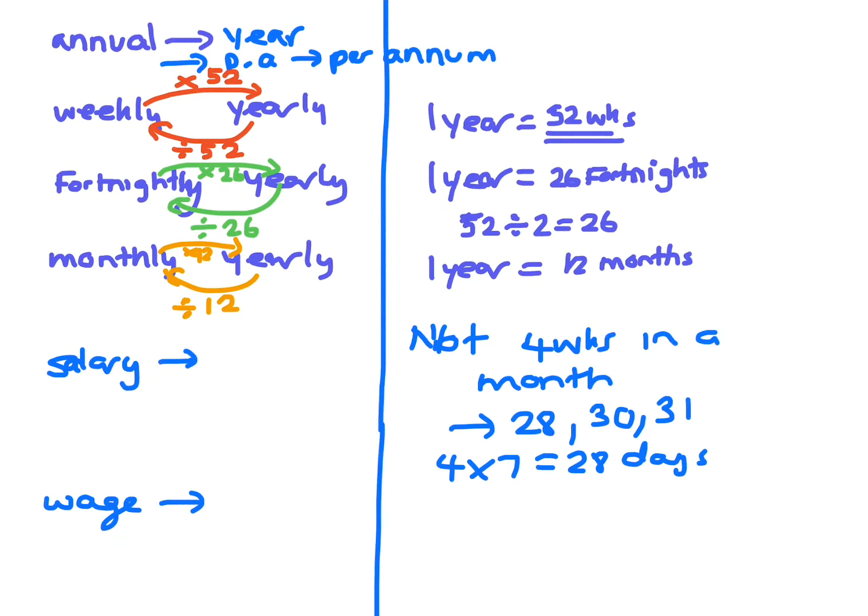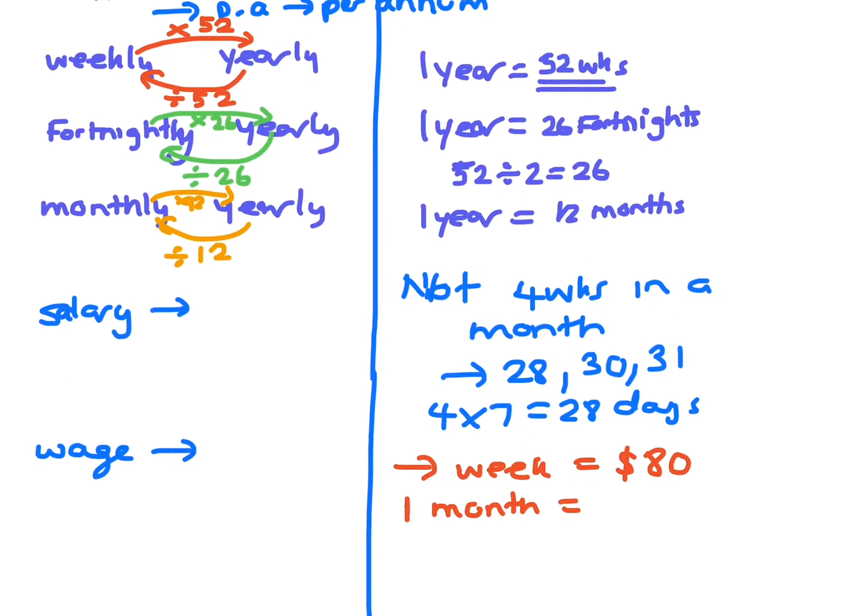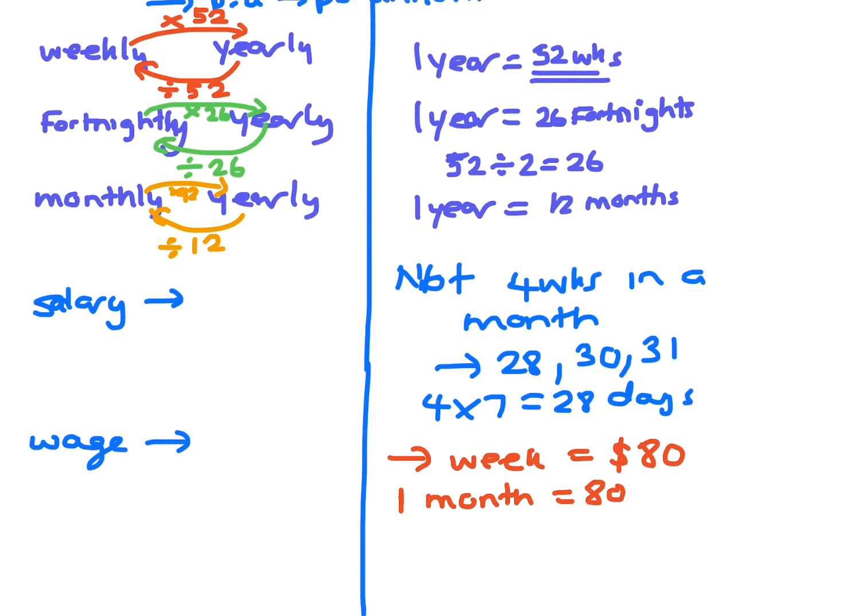So the problem here is that if you were given a week, and say your week was $80, and you wanted to get how much for one month, then you can't simply times that by four. What you need to do is get the $80 and times by 52, because when you do that, you get it for one year. So if you did 80 times 52, you end up with $4,160.